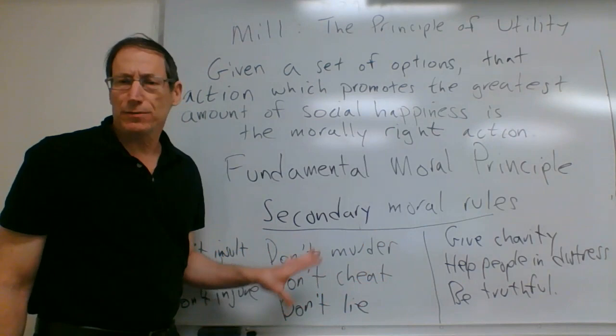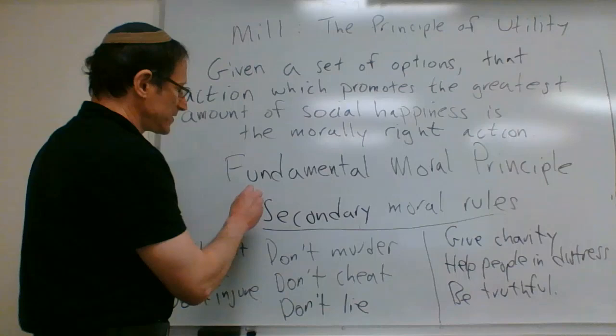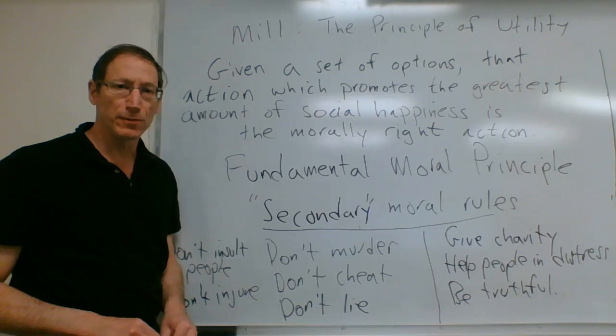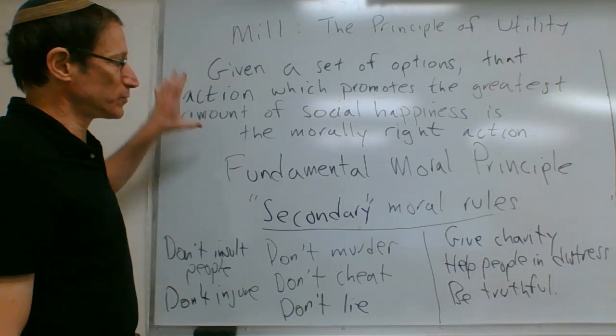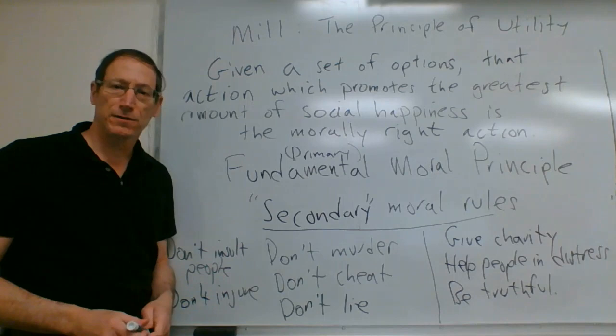This is not a complete list — we could come up with more rules that most of us tend to believe in. But these are called secondary moral rules. According to Mill, the fundamental moral principle is the primary moral rule, and these others are only secondary.